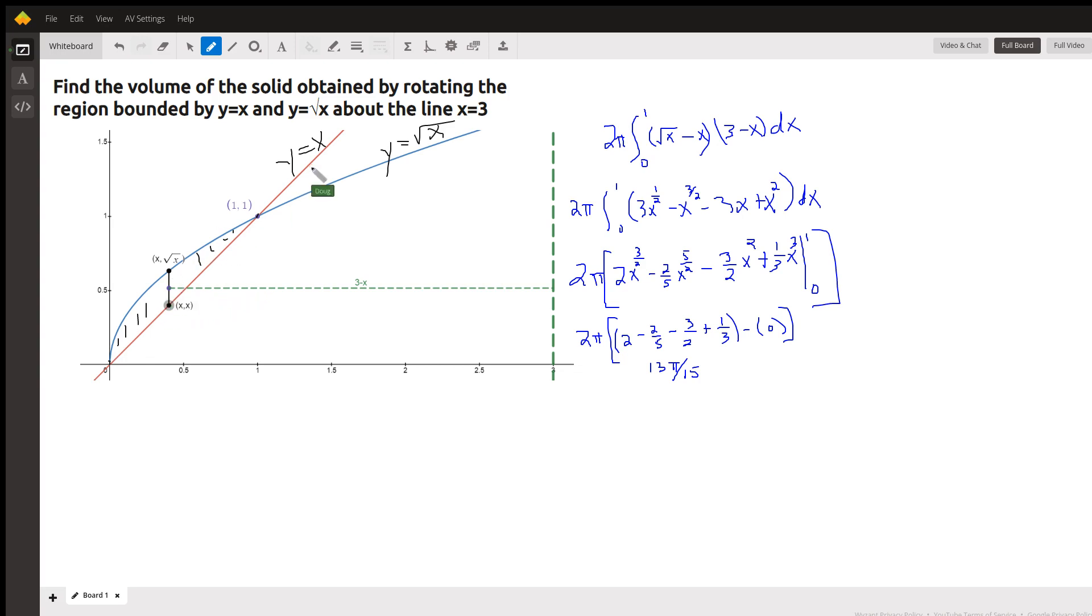We're going to revolve that region about the line x equals 3. You could do this either with the shell method or the washer method. Shell method looks a little bit easier to me. And when you use the shell method, you want your typical shell to be parallel to the axis of revolution, which is this thick dashed green line out here.